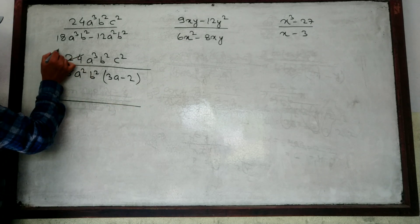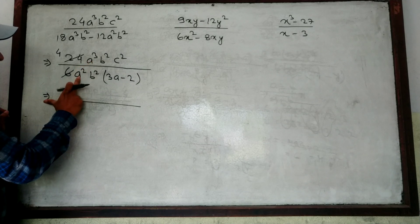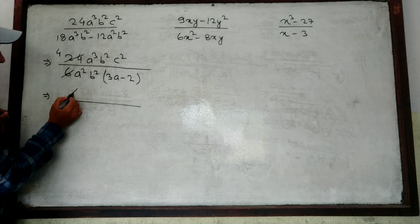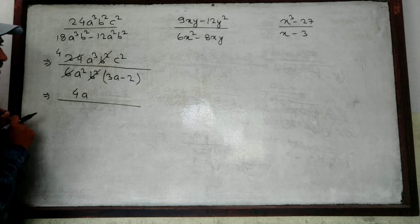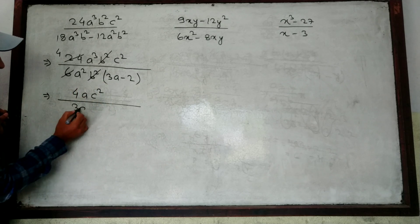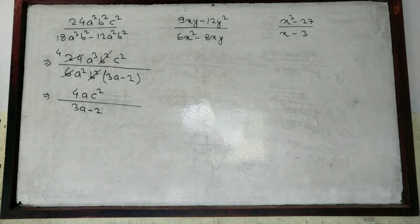In the numerator: 24 divided by 6 is 4. For A: A³ divided by A² gives A to the power 3 minus 2, which is A. B² and B² cancel. C² remains. So the answer is 4AC² divided by (3A minus 2).